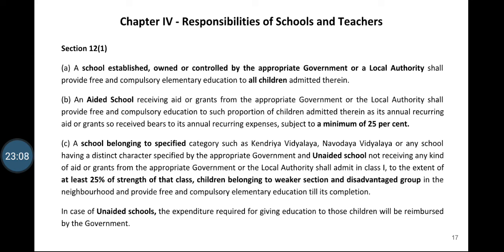There is one more clause applicable only to unaided schools: the expenditure required for giving education to those children will be reimbursed by the government, since they are not getting any extra aid. This particular expenditure for giving education to children under the RTE provision will be reimbursed by the government.